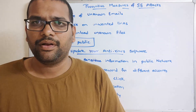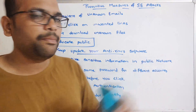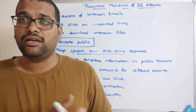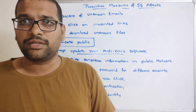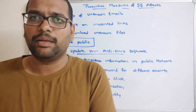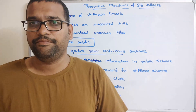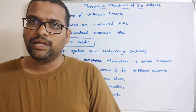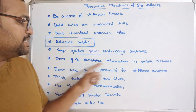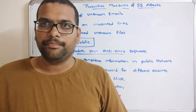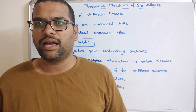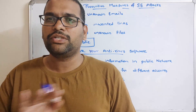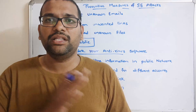Don't give sensitive information over public networks. We all use public networks — in bus stands, railway stations, or other public places where Wi-Fi is provided. Don't use those public networks for sensitive activity, and even if you are using a public network, don't provide any sensitive or personal information on it. You can browse the internet, but don't enter any sensitive information.